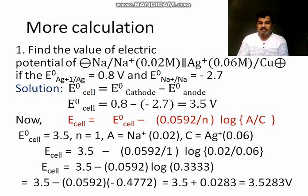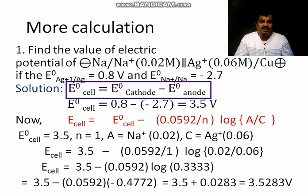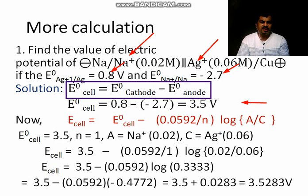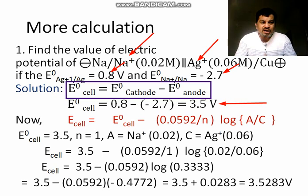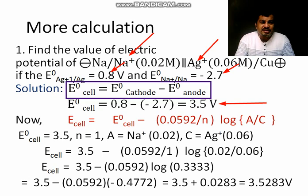E degree cell is equal to E degree cathode minus E degree anode. This is our first formula and that is very simple. Now we are going to talk about the values. See the value of E degree Ag is 0.8 and sodium is 2.7 cathode is right side cathode and left side anode. So that value we have put and cell potential we got 3.5. This is our first basic and very simple calculation that we have found out here.